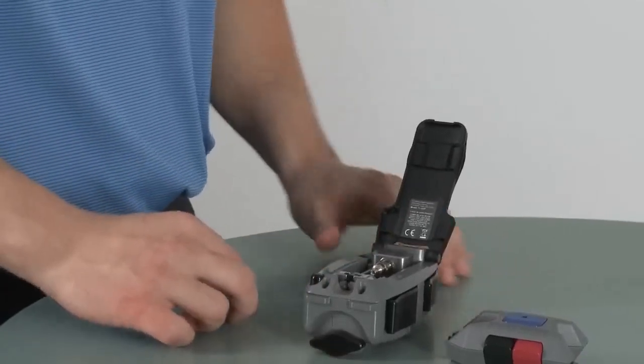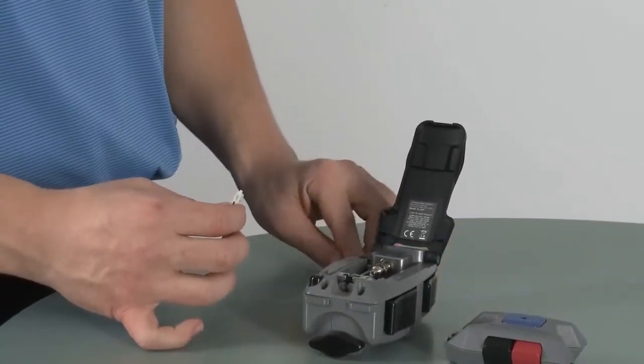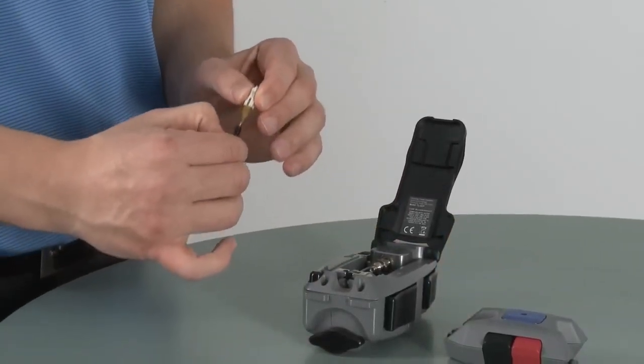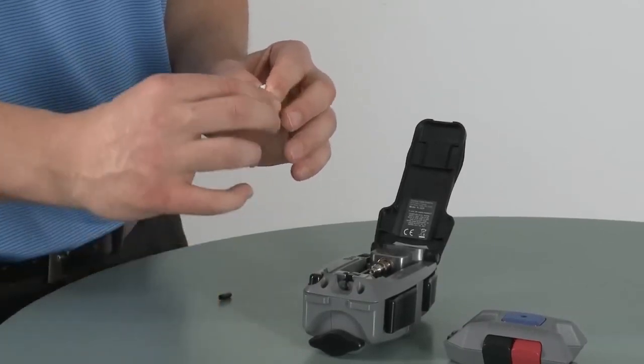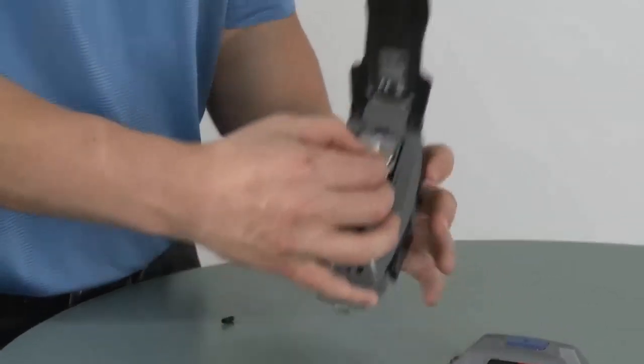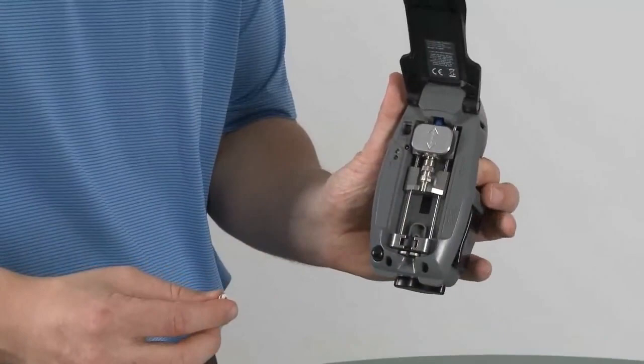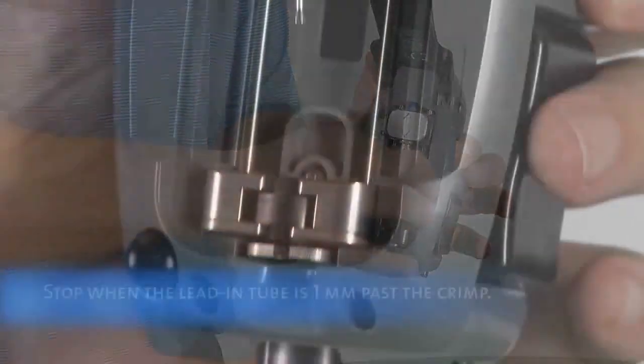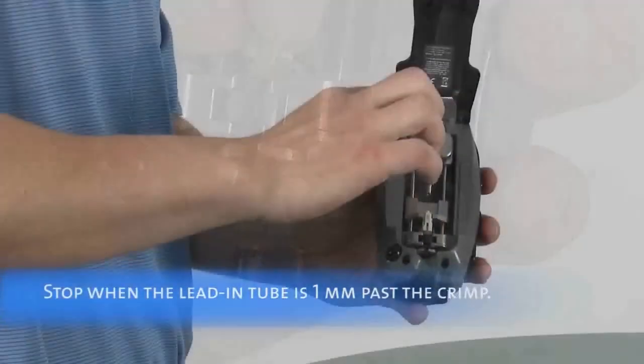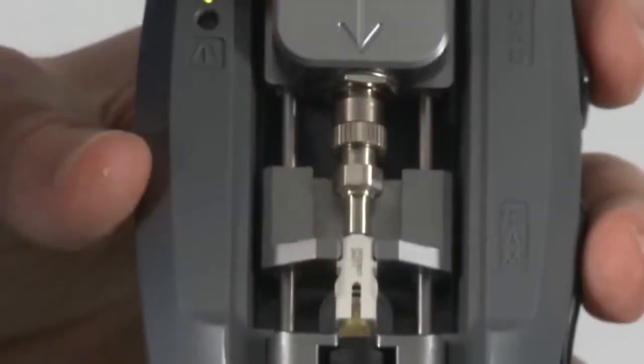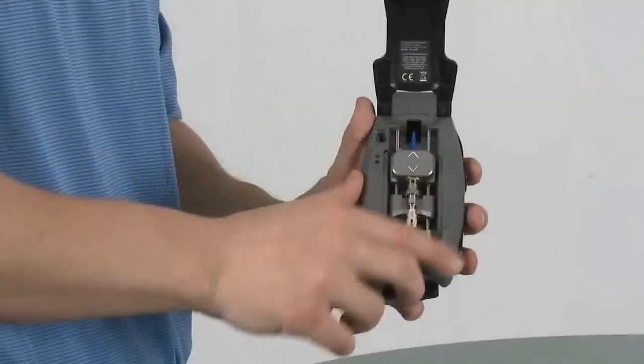Next grab your connector, remove the dust cap, and the plastic shroud protecting the lead-in tube. Grabbing the tool in our left hand, gently press down on the load button and insert your connector. Slide the VFL coupler down so the ferrule adapter is seated in the connector.